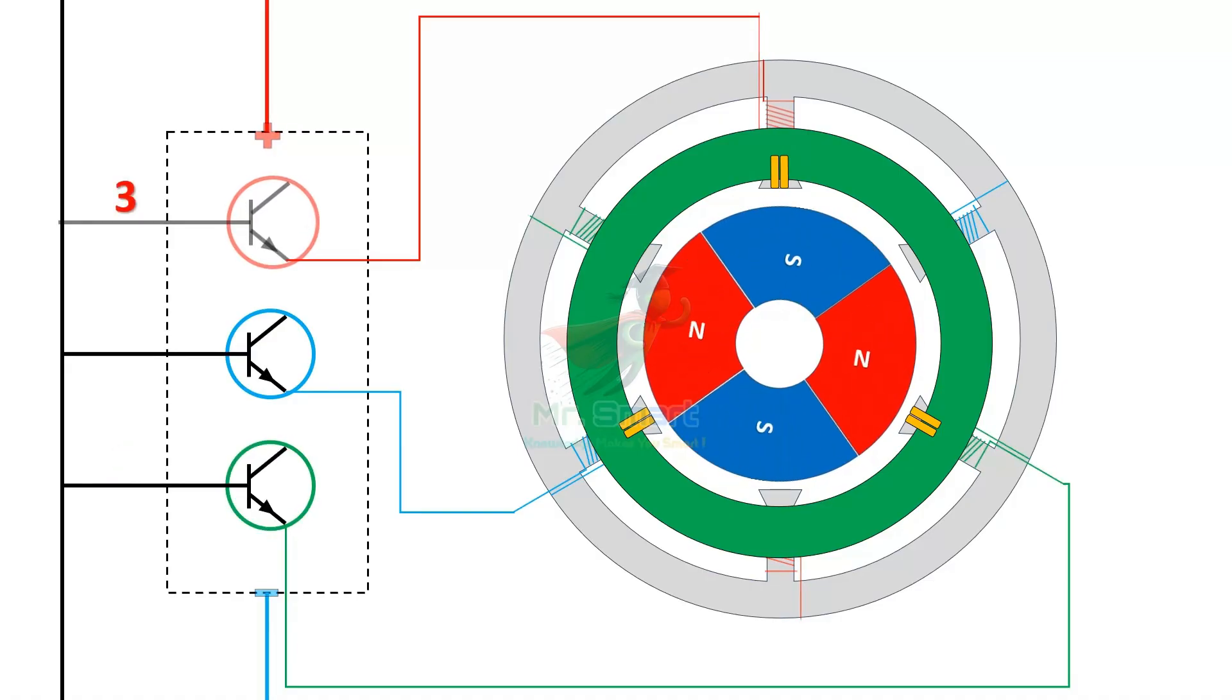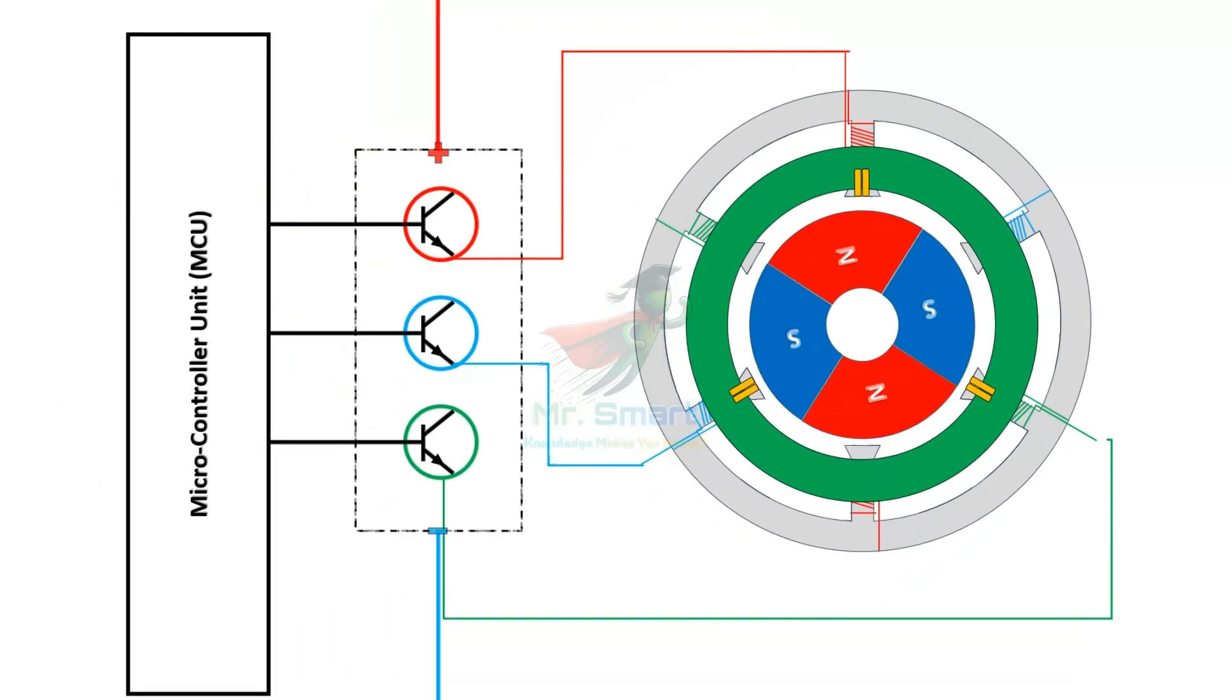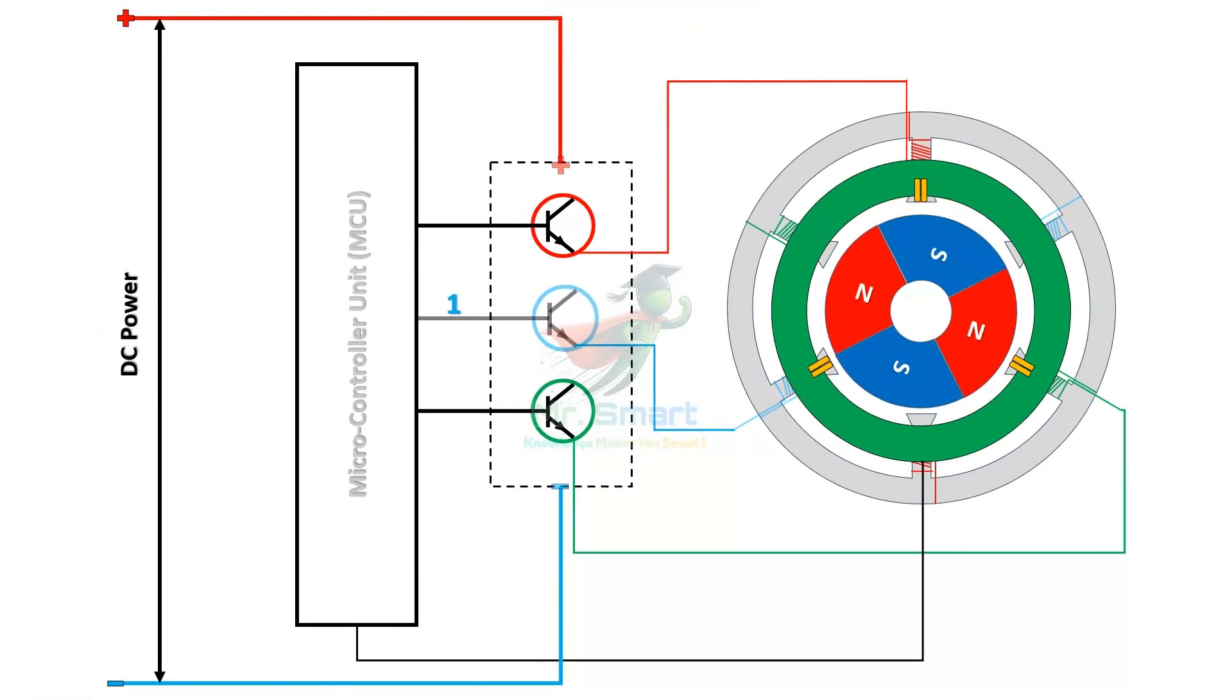The MCU continues this sequence to have continuous forward rotation. When it wants to reverse the direction of the motor, it reverses the sequence. By this way, the direction control of the motor is done.